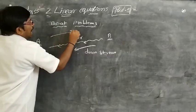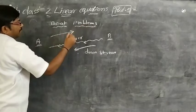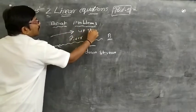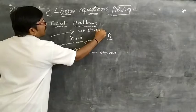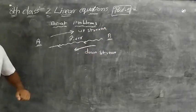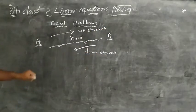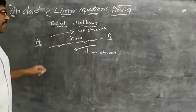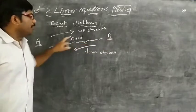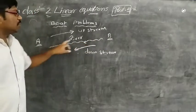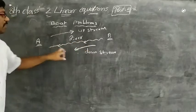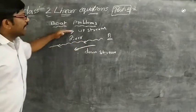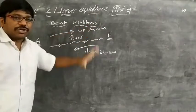And travelling against the river's flow is called upstream. Now, if a river flows from A to B, then travelling from A to B is downstream, and travelling from B to A is upstream.